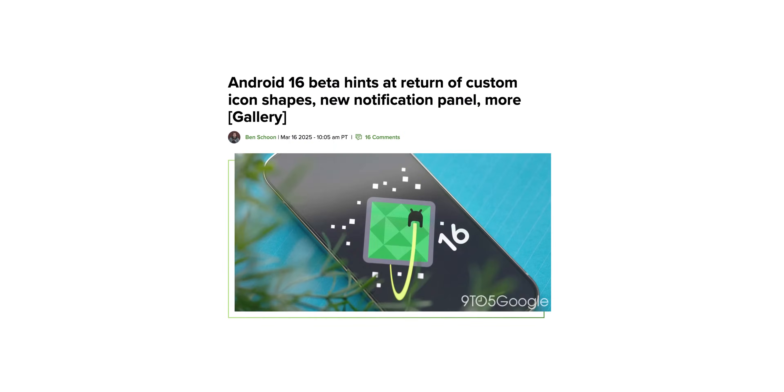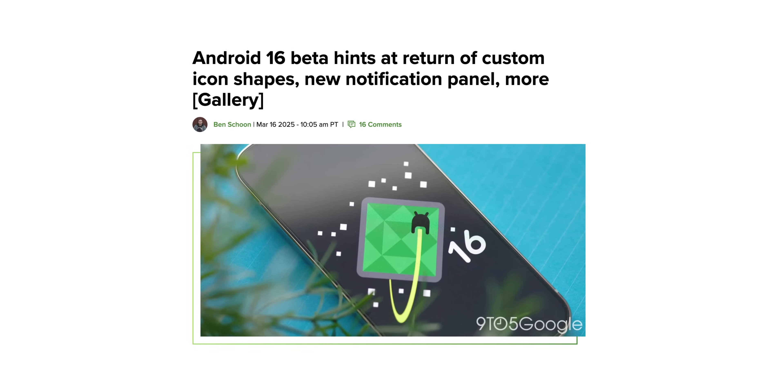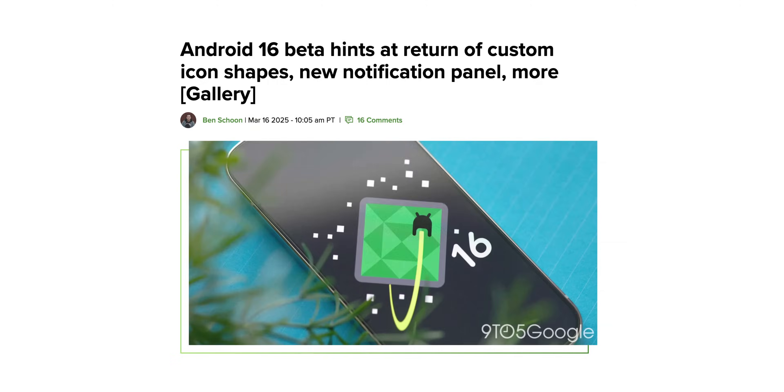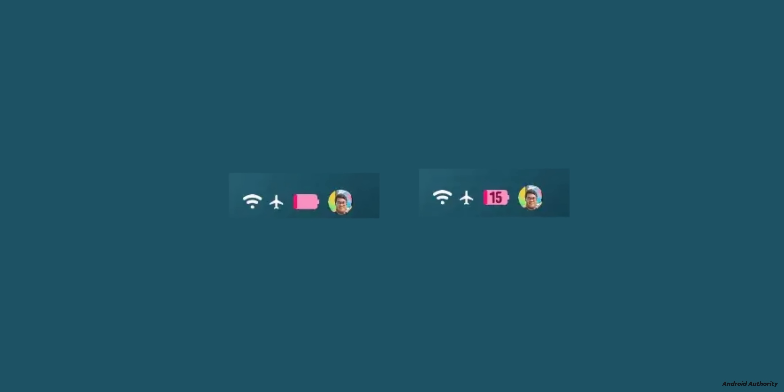Google is also tweaking status bar icons potentially later down the line. The Wi-Fi signal strength icon will now display three segments instead of five. Battery icon visuals are also being refined — when the battery is sufficient and not charging, it'll be solid white; when low, it'll turn red; and when charging, it'll be a vivid green. The battery level percentage is also set to become bolder and the icon is going to be flipped. These changes provide cleaner, more intuitive information at a glance, though these are technically still leaks and may change.